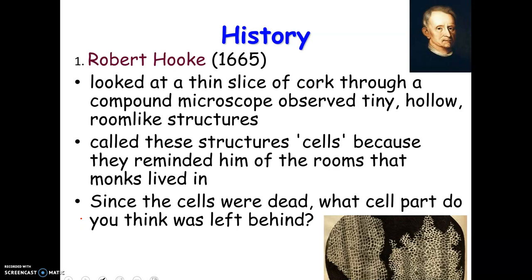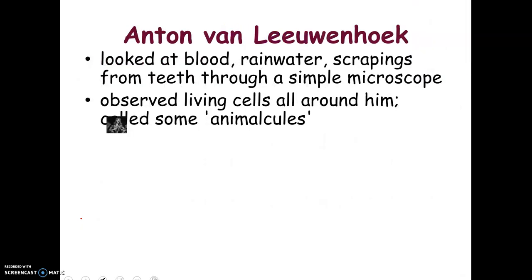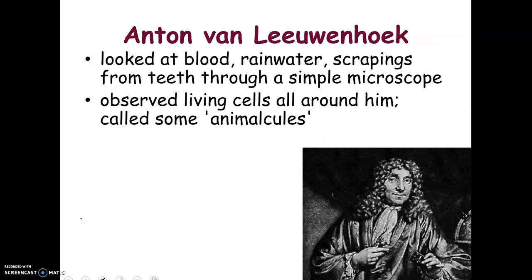He really was only looking at the cell walls because the cells were dead, so the other cell parts were kind of gone — dried out — but the cell walls were there. After his time, another man, Anton von Leeuwenhoek, actually looked at live cells. He looked at blood, rainwater, scrapings from people's teeth, using a simple microscope, and he actually saw living cells. He called them 'animalcules' because they looked like little tiny animals.